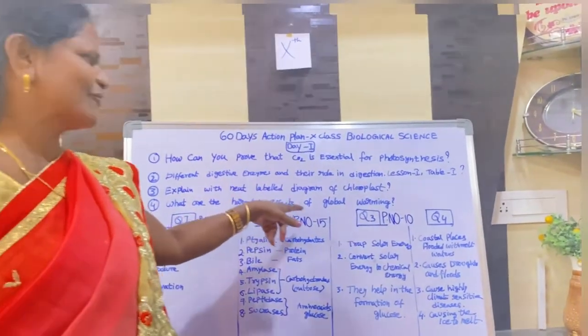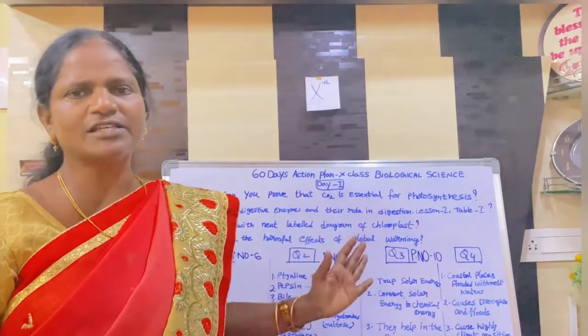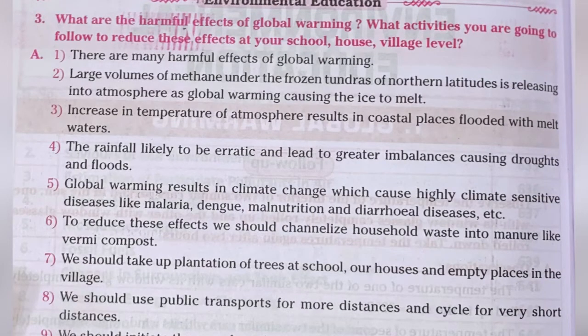Fourth question: what are the harmful effects of global warming? There are many harmful effects. Large volumes of methane under frozen tundras of northern latitudes are releasing into the atmosphere as global warming causes the ice to melt. Increase in atmospheric temperature results in coastal places being flooded with melt waters. Rainfall is likely to become erratic, leading to greater imbalances causing droughts and floods. Global warming results in climate change which causes highly climate-sensitive diseases like malaria, dengue, malnutrition, and diarrhea.